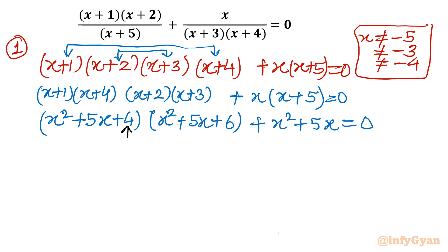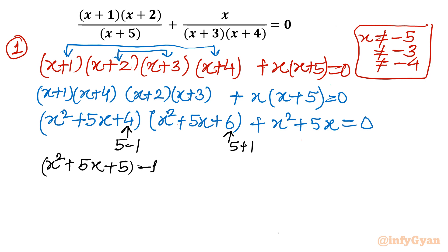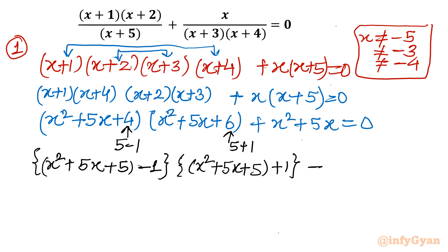We can write the constant 4 as 5 minus 1, and 6 as 5 plus 1. So the expression becomes (x² + 5x + 5) minus 1, multiplied by (x² + 5x + 5) plus 1. Now if we presume (x² + 5x + 5) is 'a' and 1 is 'b', this is of the form (a minus b)(a plus b) — a difference of two squares.